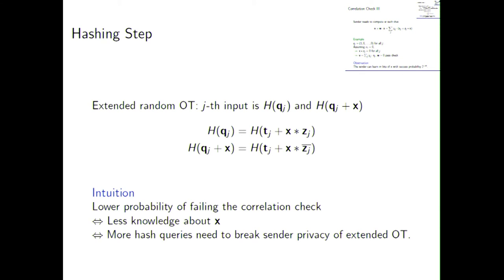So, again, the big picture is here, essentially, this is a bet on the first bit of X being 0. If he passes the check, he knows that the first bit of X is 0. If he fails the check, he knew he was wrong. So, essentially, the observation here is that the adversary, or a corrupted sender, can learn m bits of X with success probability 2 to the minus m.